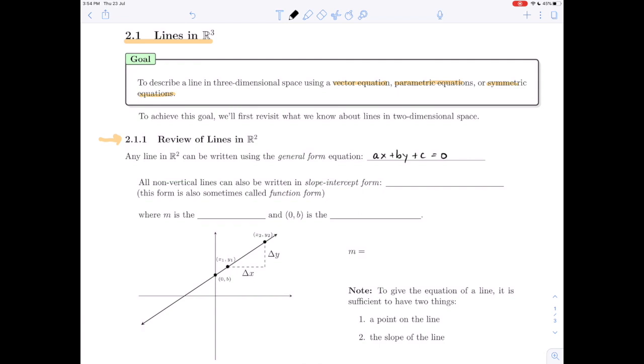All non-vertical lines can also be written in their slope-intercept form, which was y = mx + b. That's the form you probably used in your calculus class. In high school, you might have written y = ax + b.